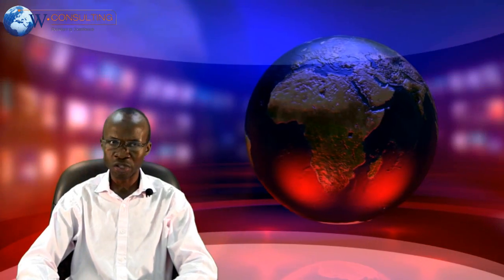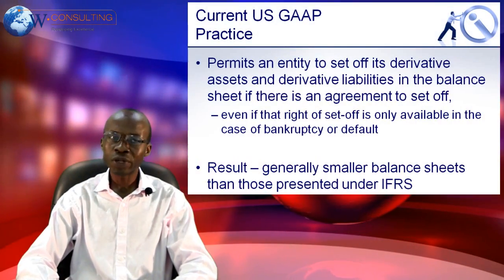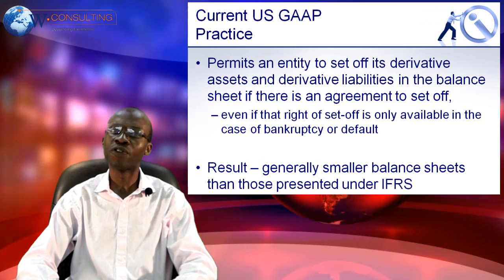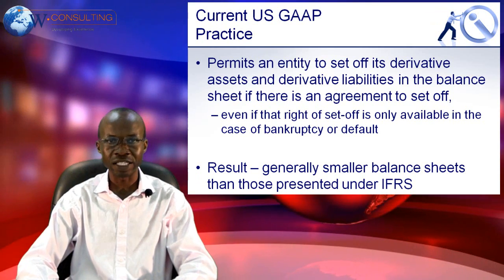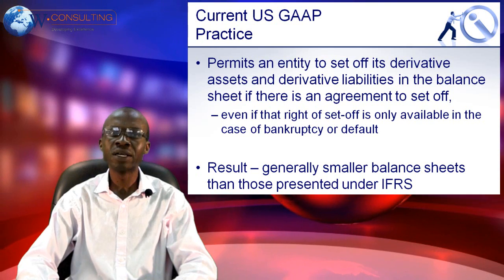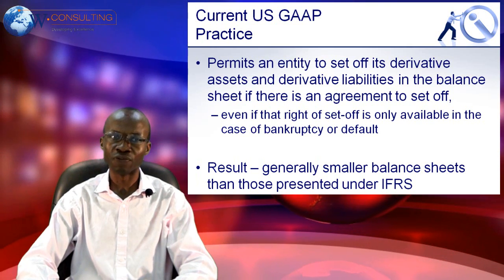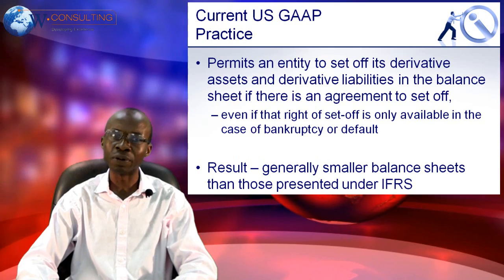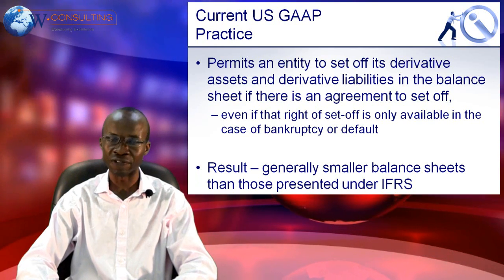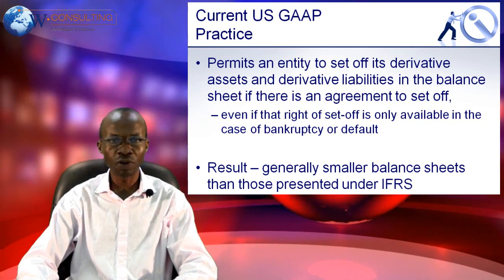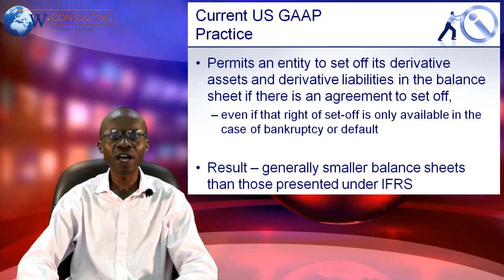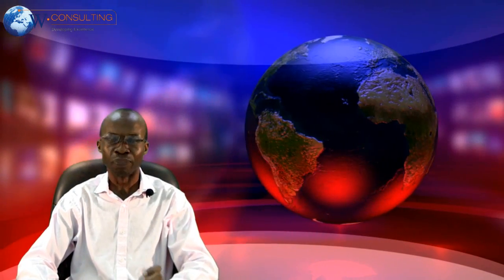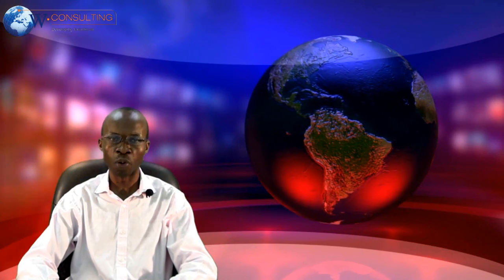When you look at what US reporters are doing at the moment, US GAAP permits organizations to set off their derivative assets against their derivative liabilities on their balance sheet if there is an agreement to set off, and even if that right of set-off is only available in the case of bankruptcy or default. The result of all of this is that in terms of IFRS, we generally have much bigger balance sheets than what the US GAAP reporters have.